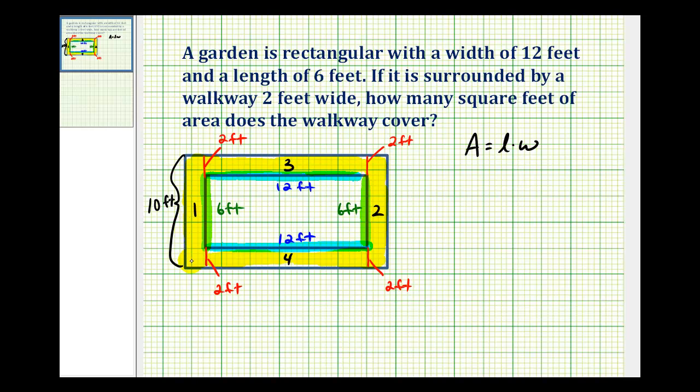So this rectangle has dimensions of 10 feet by 2 feet, which would be an area of 20 feet squared. But rectangle 2 has the same area, so the area from rectangles 1 and 2 would be 40 feet squared.